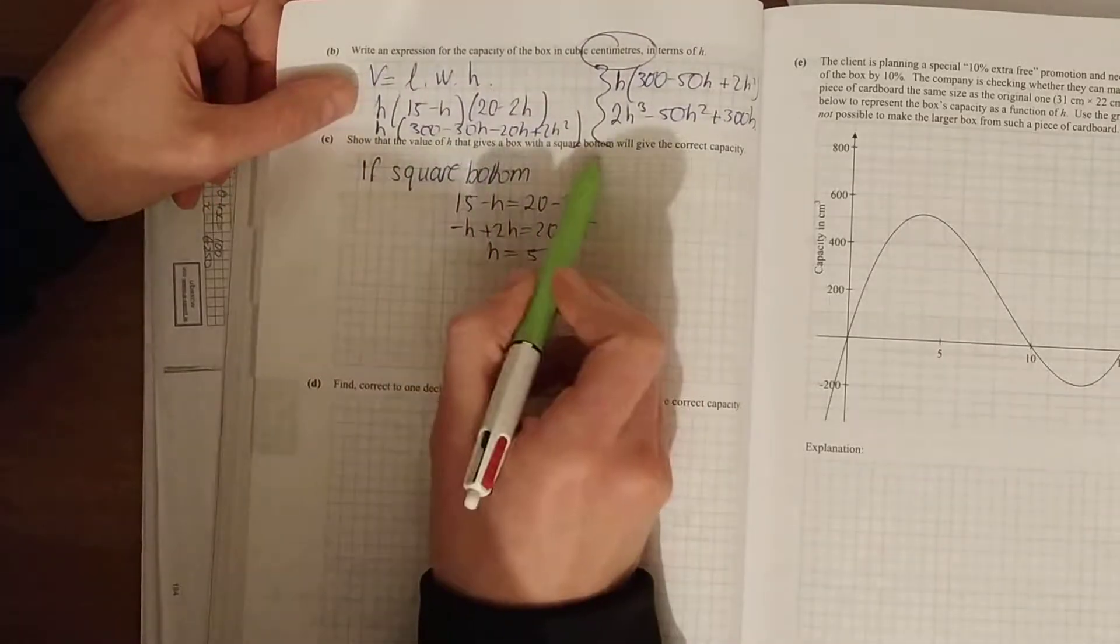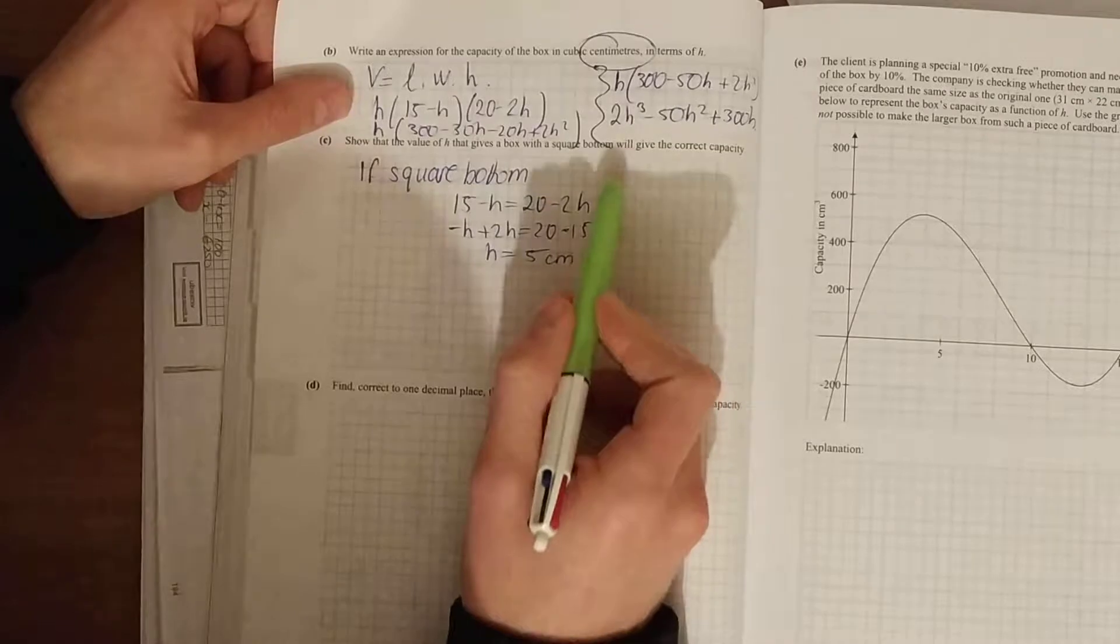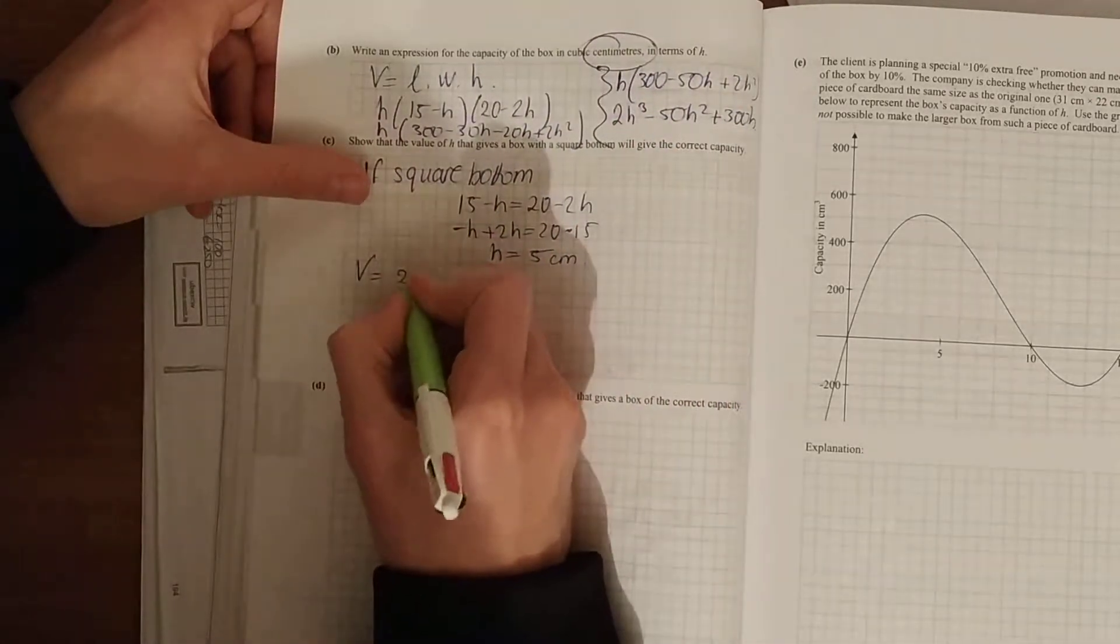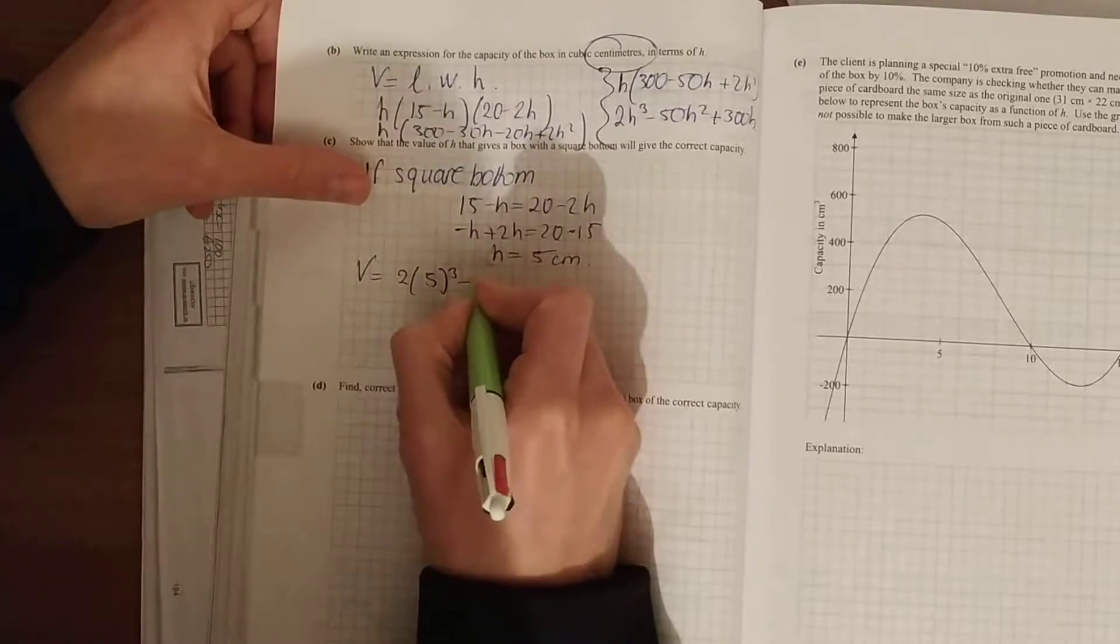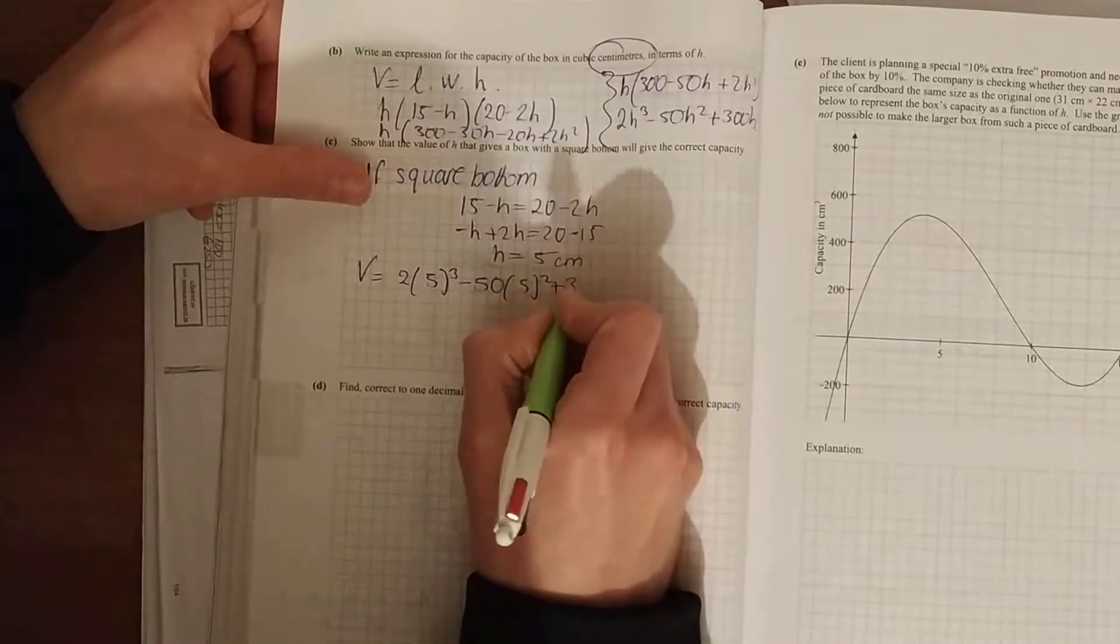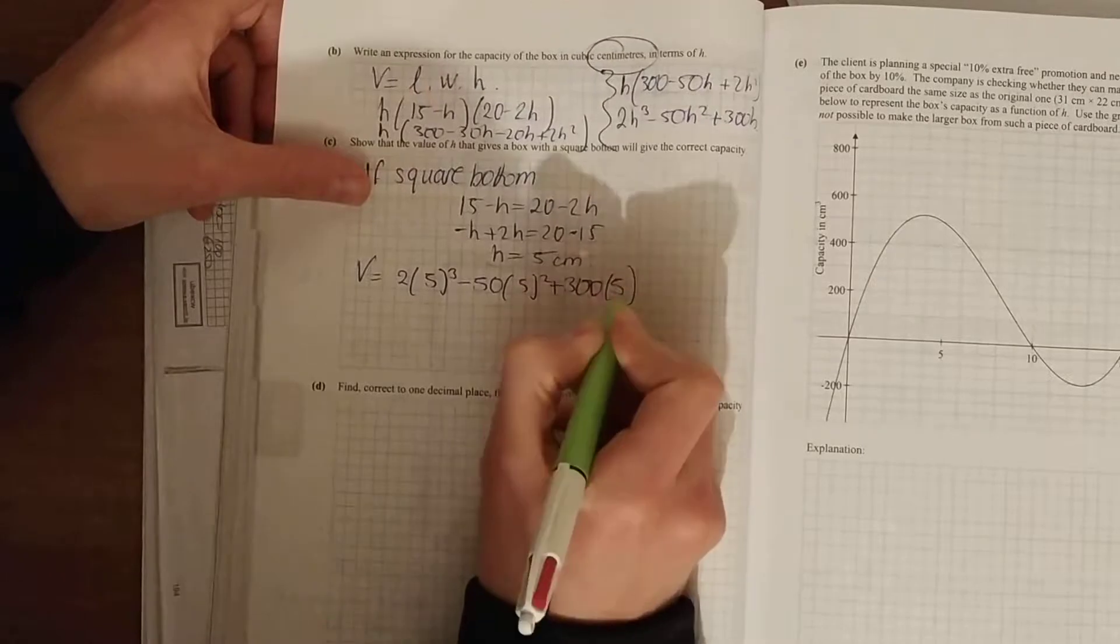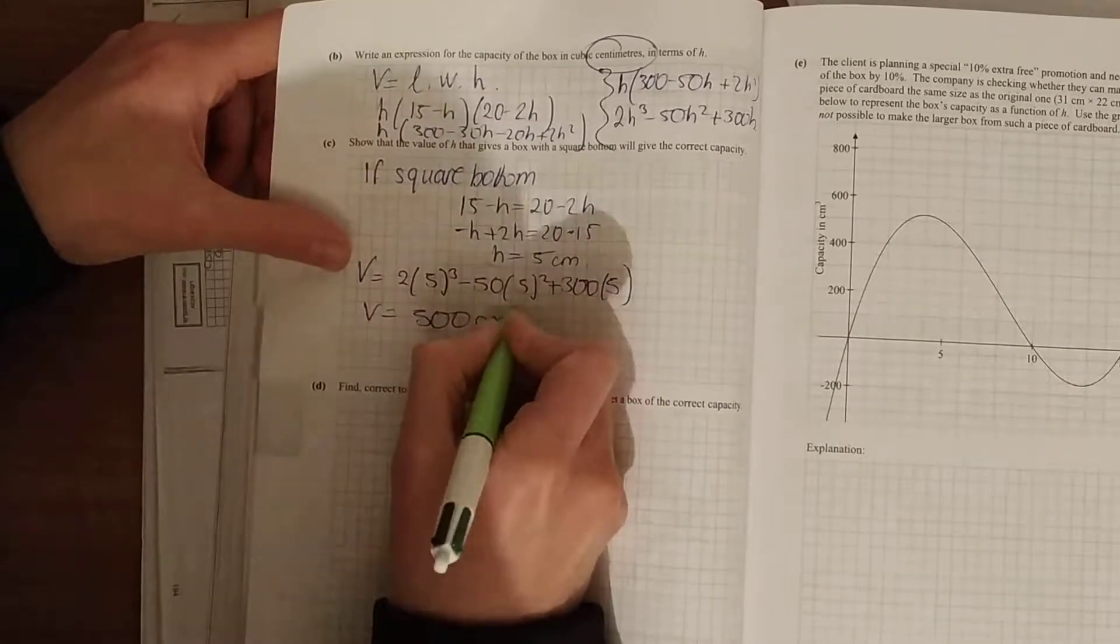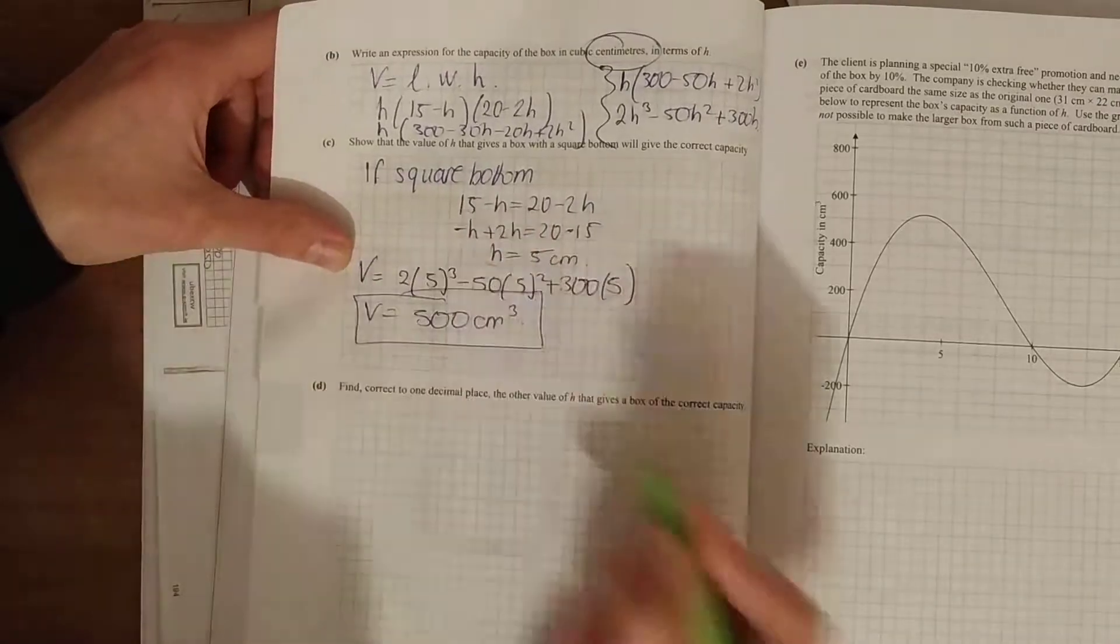And to show that the value of h that gives a square bottom will give the correct capacity, plug that into your volume. So the volume is equal to 2 times 5 cubed minus 50 times 5 squared plus 300 times 5. When you put that in, you should get 500 centimeters cubed, because that's what it says - the correct capacity.